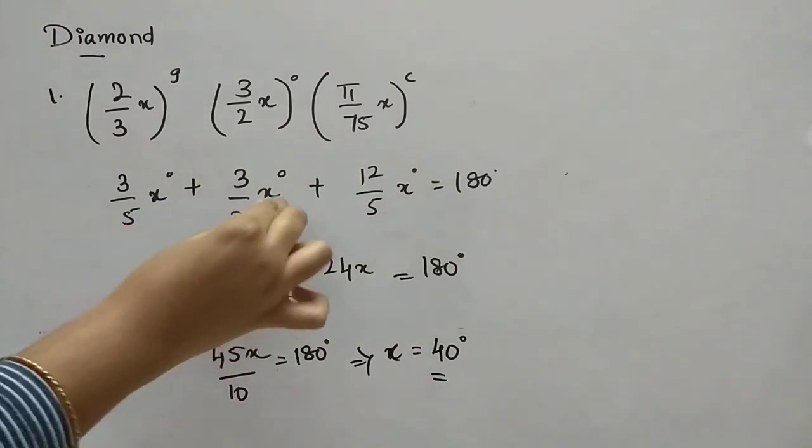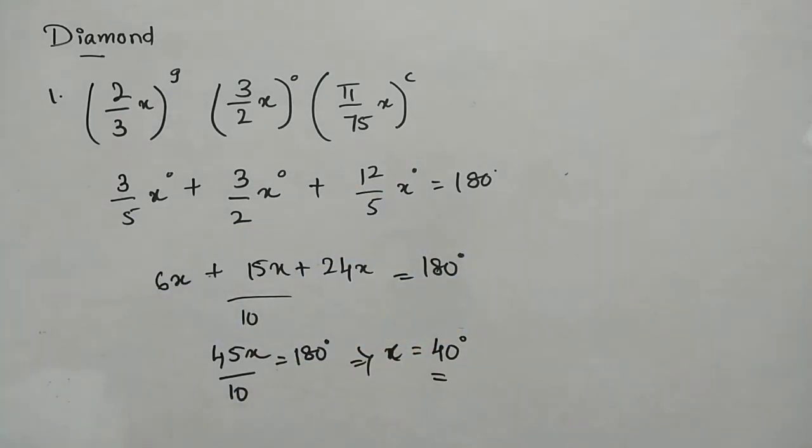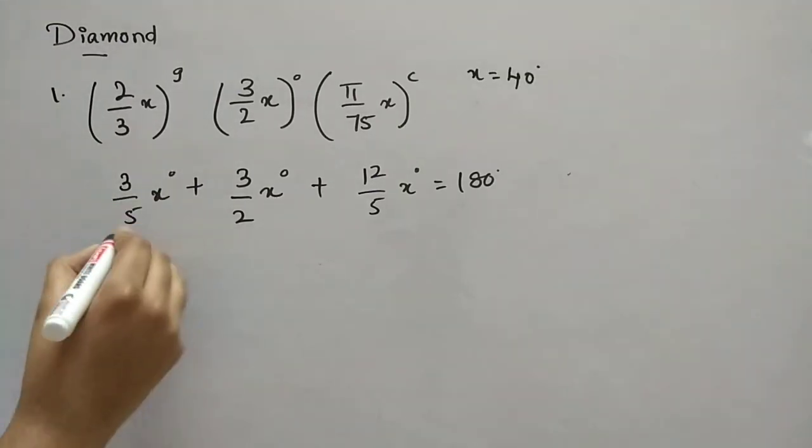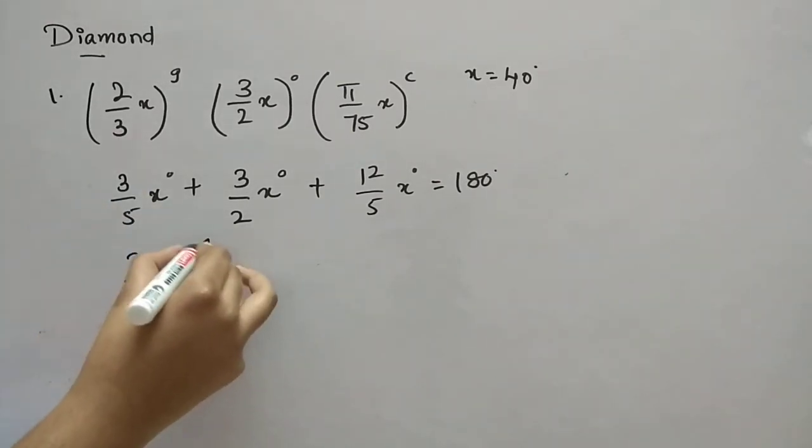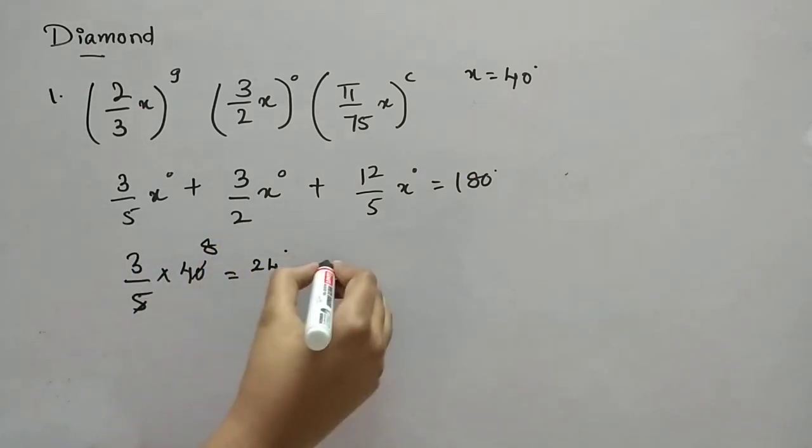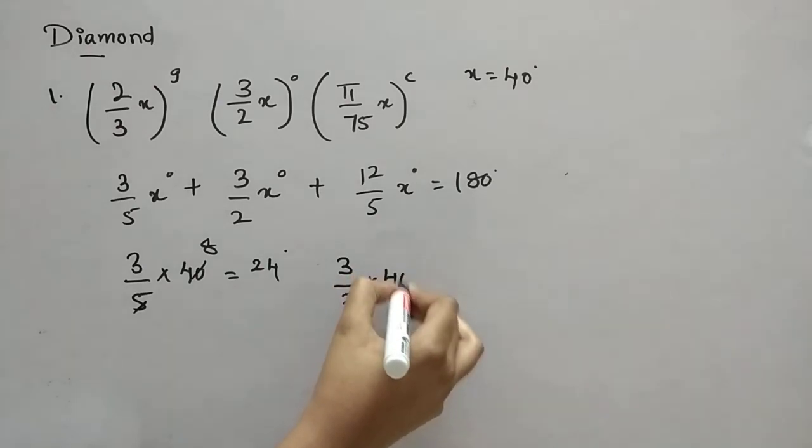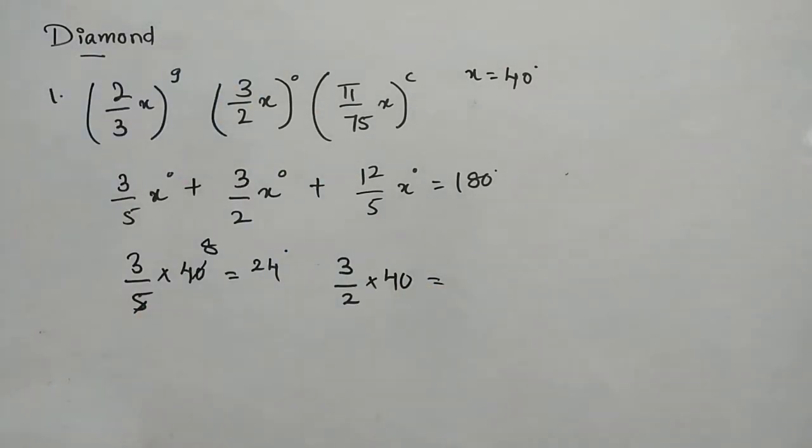Now actually we have to find angles. So 3 by 5 of x, 3 by 2 of x, 12 by 5 of x. Everything we will find and substitute. So 3 by 5 into 40 is 24 degrees. Now 3 by 2 into 40 is 60 degrees. And we have 12 by 5 into 40, that is going to be 96 degrees. So answer is option A: 24, 60 and 96.